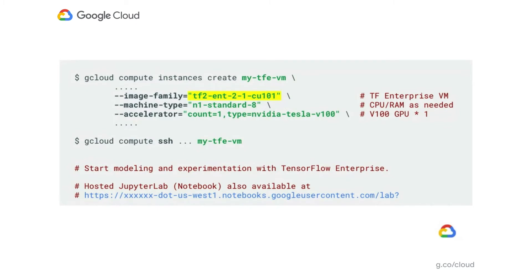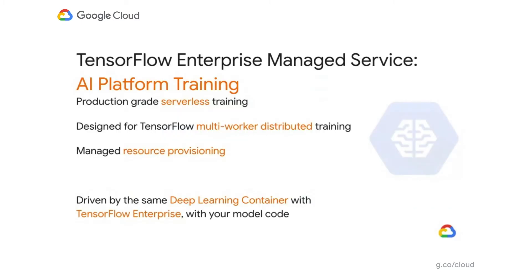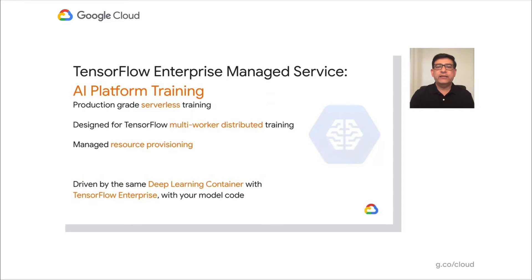You can SSH into the machine that has TensorFlow Enterprise installed with all dependencies and device drivers pre-configured, and start using TensorFlow. If you prefer a notebook environment, JupyterLab is hosted and already started on the VM, so you can go to the browser and start writing code in a notebook. Once you have a satisfactory model after running some experiments, you can train your model with the full scale of your enterprise data using distributed training. GCP's AI Platform Training is a managed service for serverless training that takes care of distributed training clusters and provisioning of compute resources. It drives the same TensorFlow Enterprise container, so you can be confident that your model trains with the full scale of data on AI Platform Training.